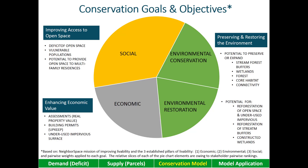In this slide, we have the elements of our conservation model. It is based on the NeighborSpace mission of improving livability, which embraces three inherent land conservation goals: a social goal of improving access to open space, a goal of enhancing economic value through land conservation, and a goal of preserving and restoring the environment. The theory is that if we do each of these things in just the right amounts, we will meet our mission of improving livability. To answer what characteristics we look for on the ground to achieve each goal, we identify GIS map layers that, if overlaid on vacant land or underused impervious surface, would give us the relative importance of parcels for conservation.